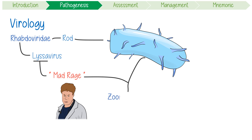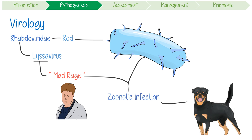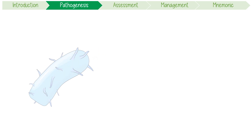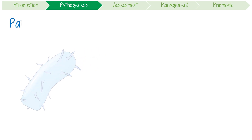Rabies is a zoonotic infection that occurs in mammals, usually transmitted to humans by the bite of an infected host, most likely a dog. Let's track the virus during its pathogenesis, which has five main steps.